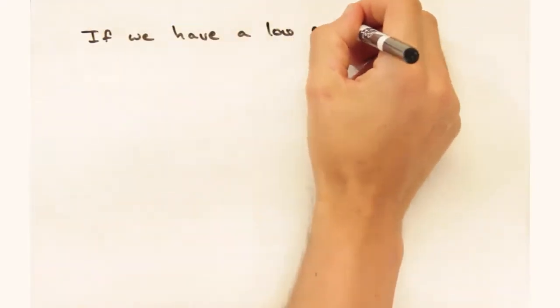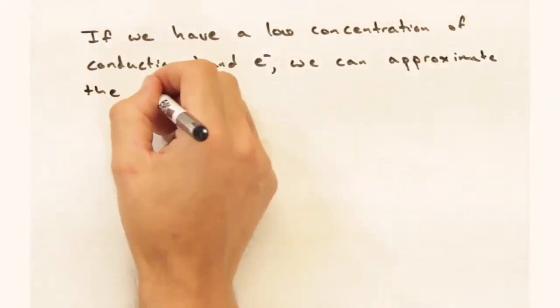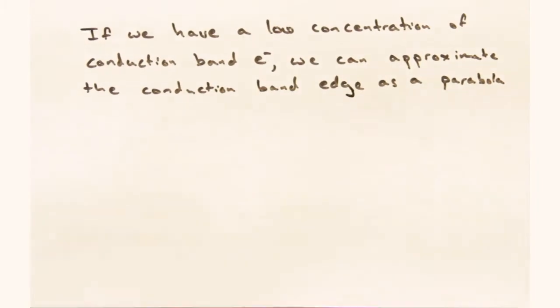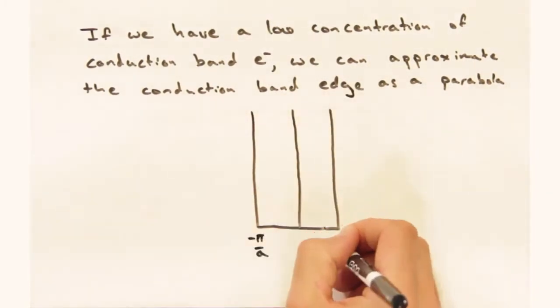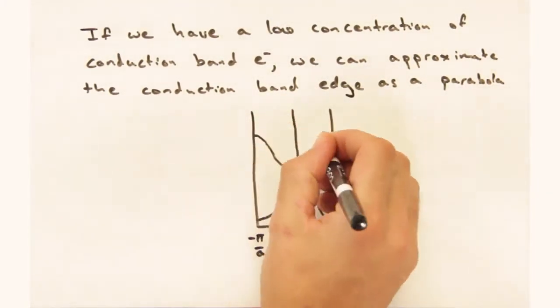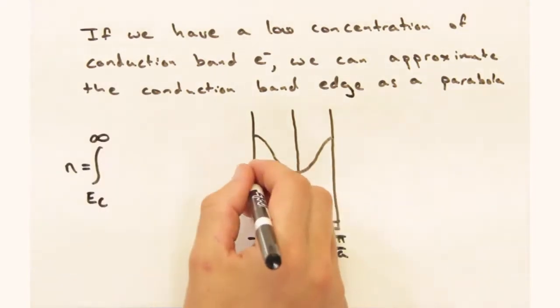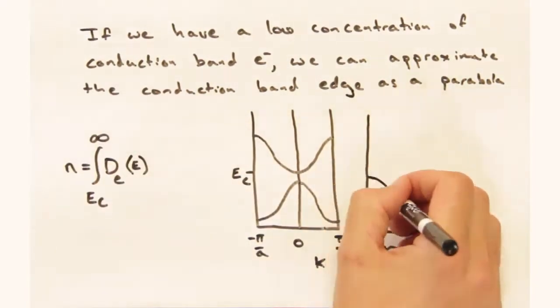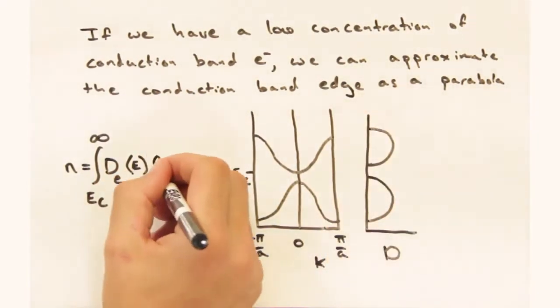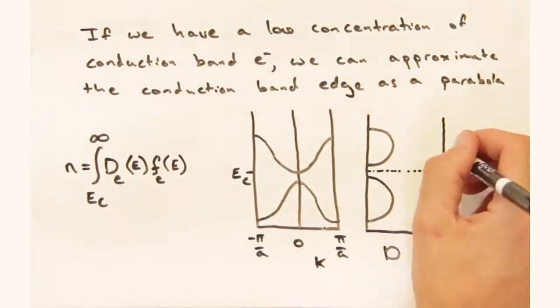Now I know we already have an expression for n from the free electron model. Can we use the same form even though we get funky behavior at the Brillouin zone edge? Yeah, provided the number of conduction electrons is small. We'll approximate the bottom of the band with a parabola, and this approach will be valid while that fit is good.